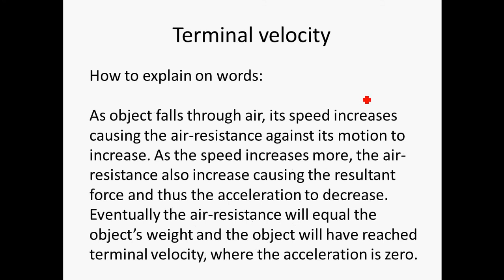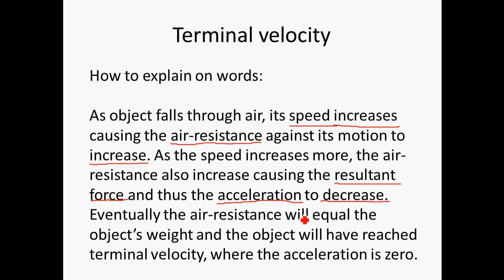To explain terminal velocity in words: as the object falls through the air, its speed increases, causing the air resistance against its motion to increase as well. As air resistance increases, the resultant force decreases, which also causes the acceleration to decrease. Eventually the air resistance will equal the object's weight, and the object will reach terminal velocity — where the acceleration is zero.